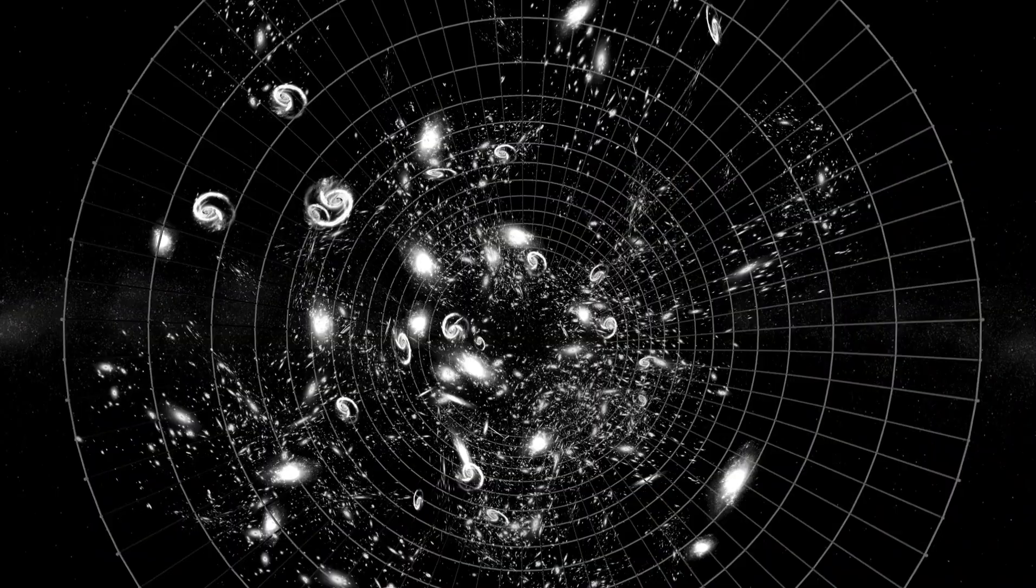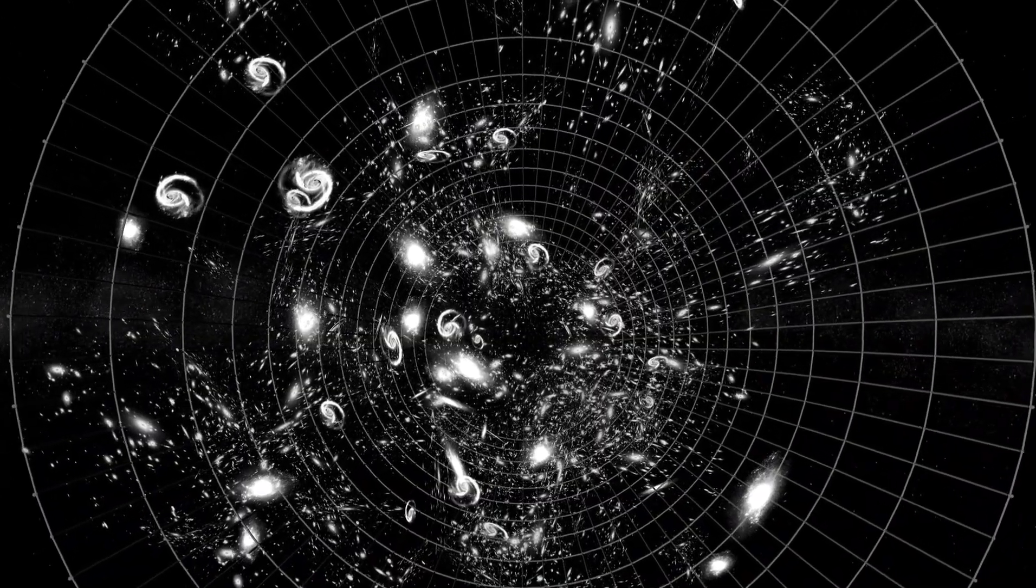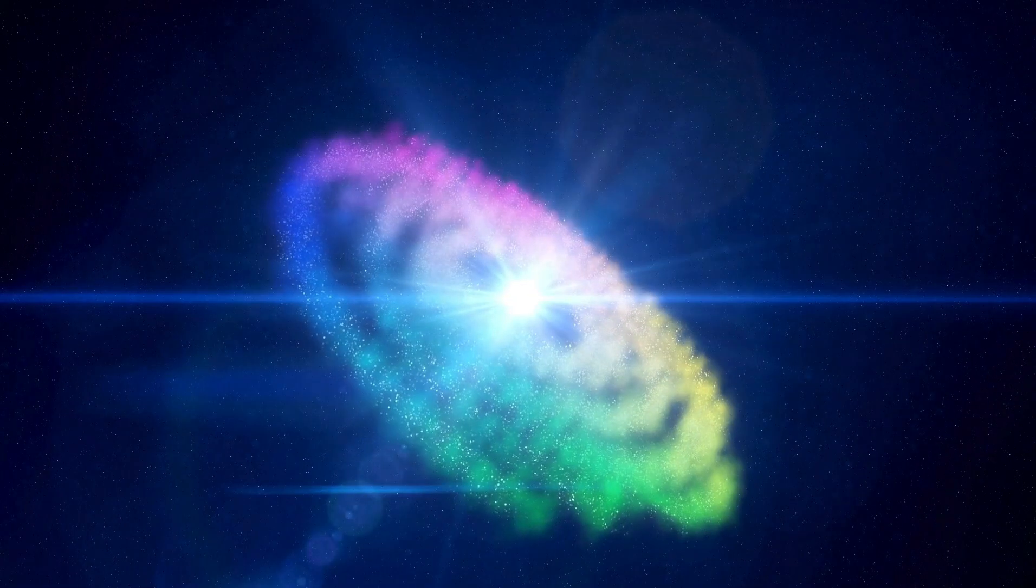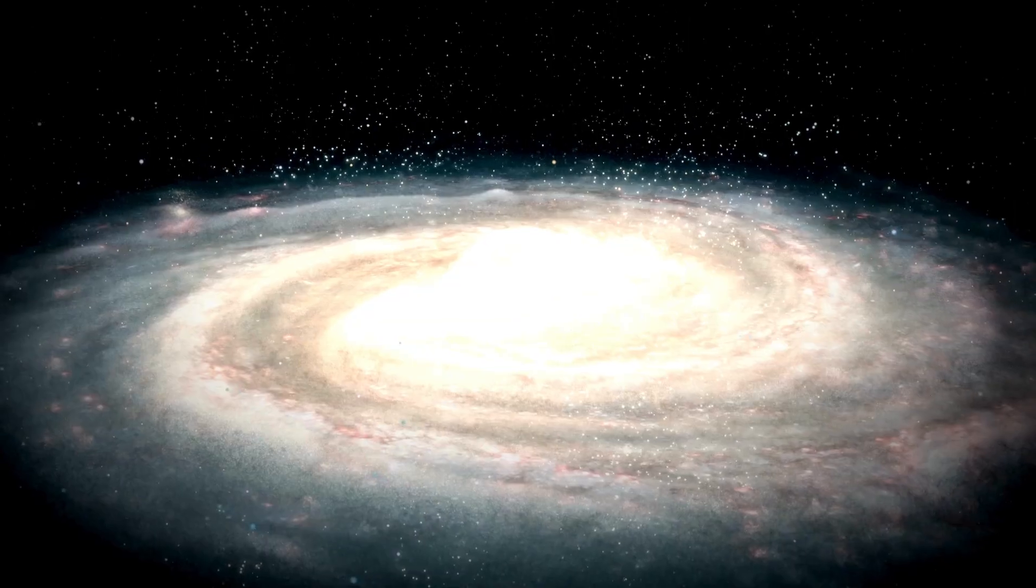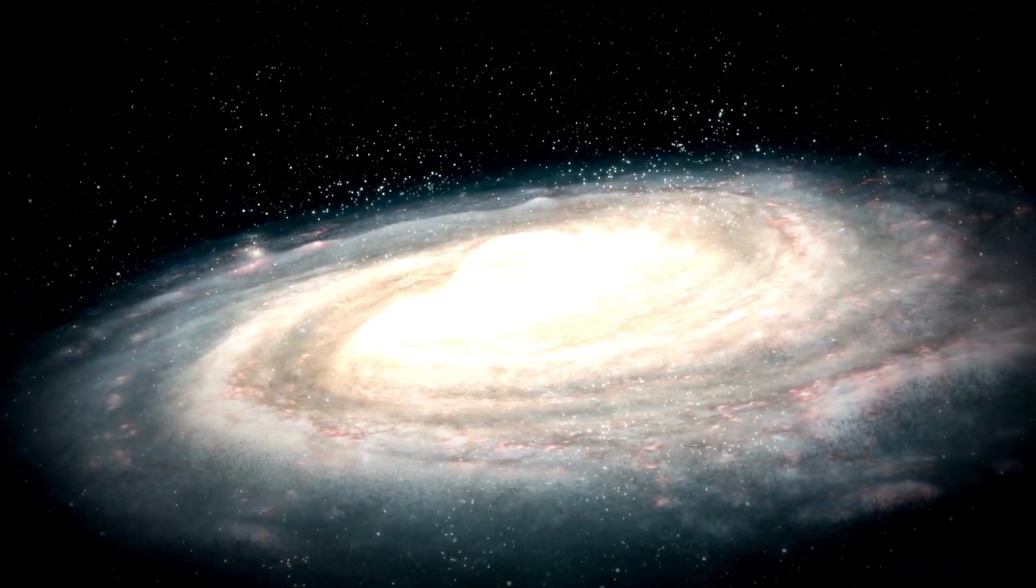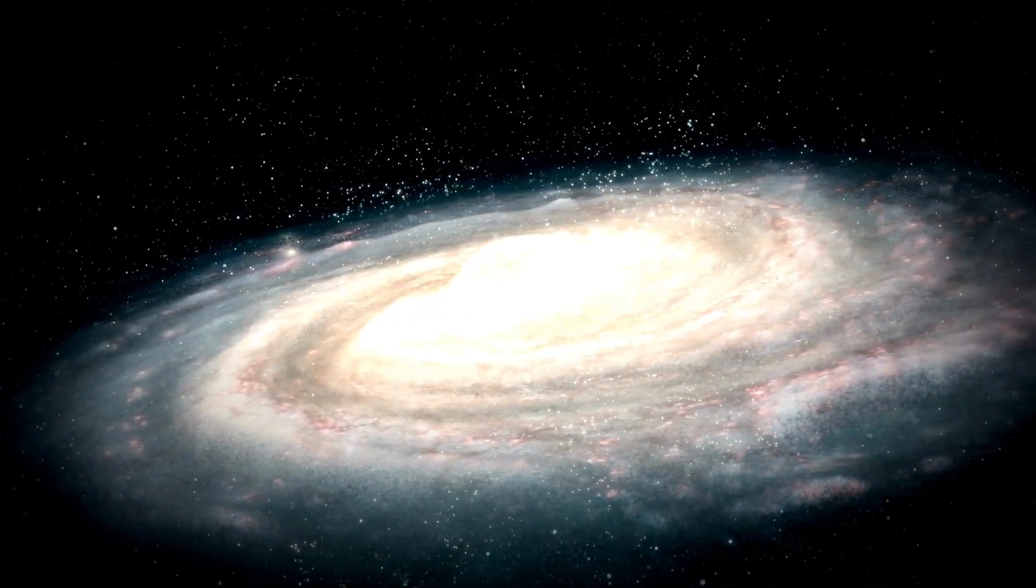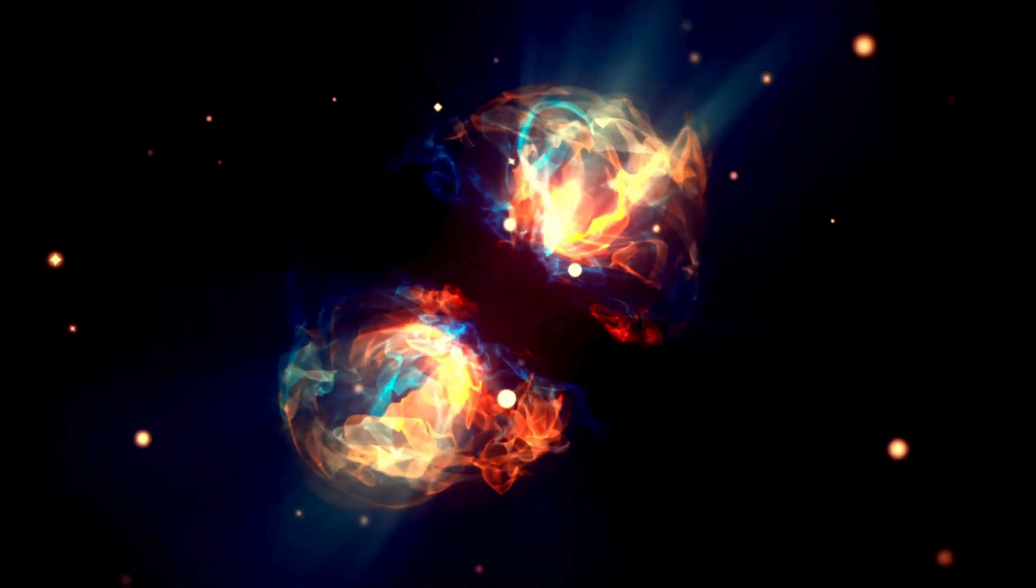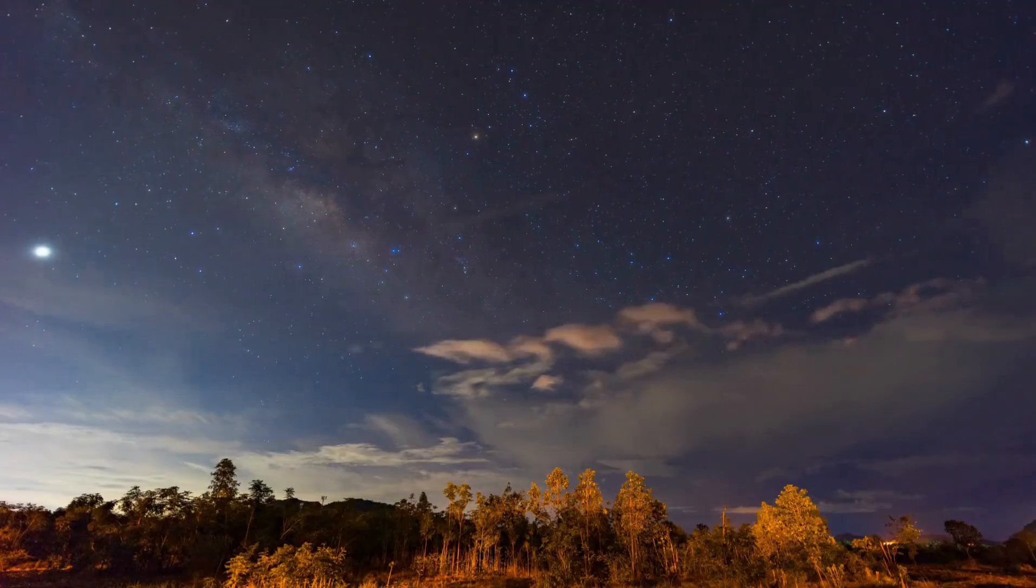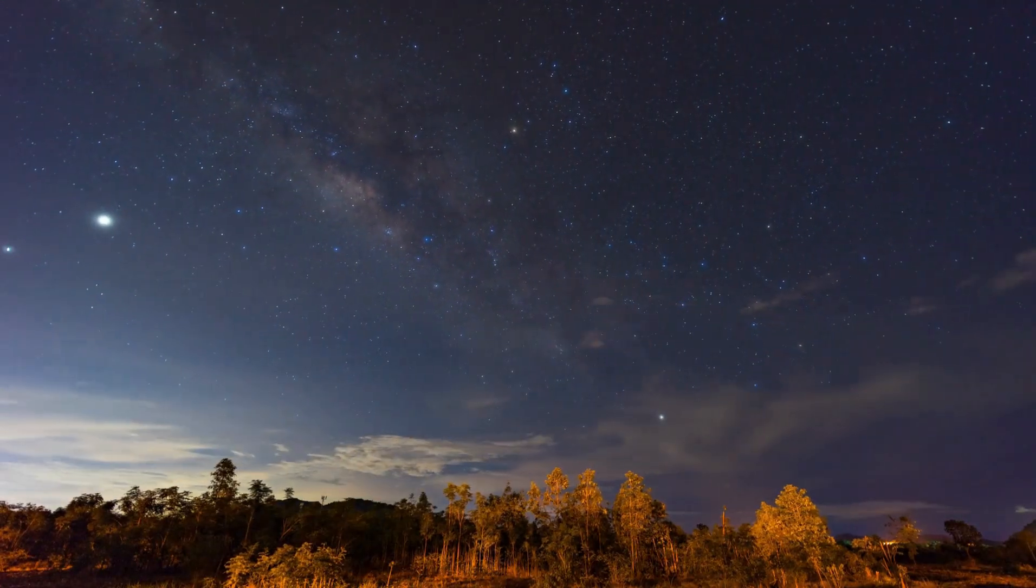This intricate interplay sustains the conditions necessary for the emergence of planets and the intricate chemistry essential for life. For the universe to manifest in its present form, several pivotal events had to occur. Gravity orchestrated the aggregation of stellar and galactic ensembles, necessitating an initial mass that gravitational forces could sculpt into larger structures. Dark matter played a crucial role in preventing the dispersal of matter during the nascent stages of cosmic formation.